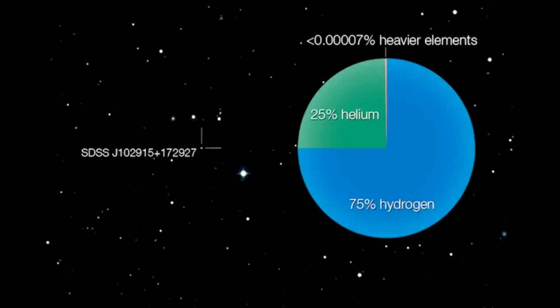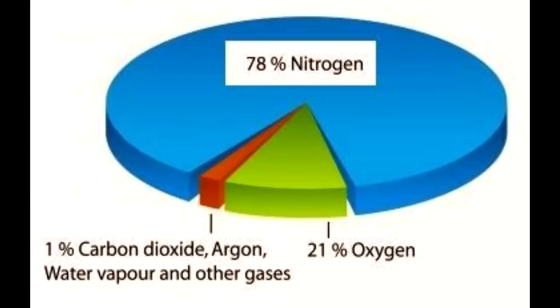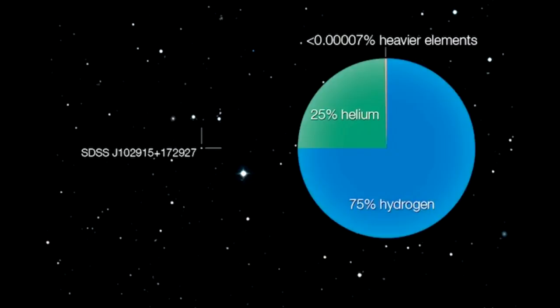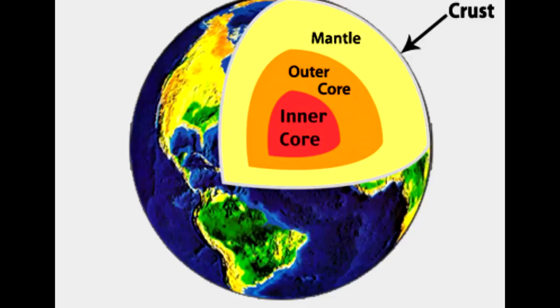The most abundant element in the earth's crust is oxygen and silicon. In the atmosphere: nitrogen 78.08%, oxygen 20.95%, argon 0.93%, carbon 0.03% — we call it NOVAC. In the universe: 75% hydrogen and 25% helium. In the earth's crust: first position is oxygen, second is silicon and other gases.